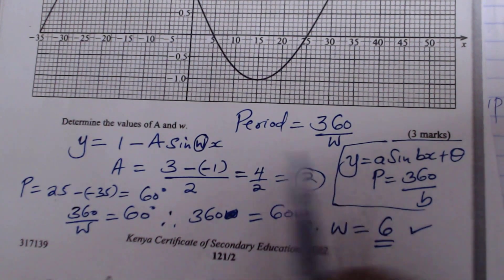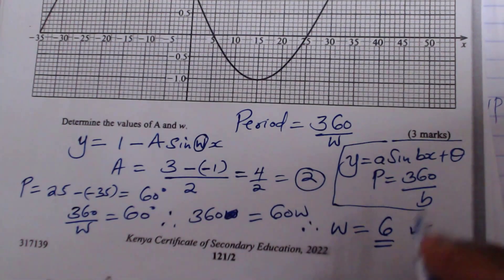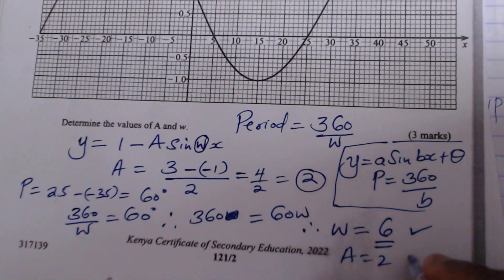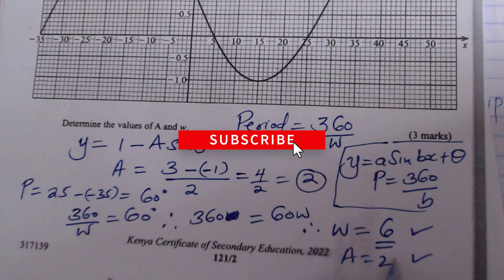So that is how you get the values of A and W. So A is 2, and W is 6.